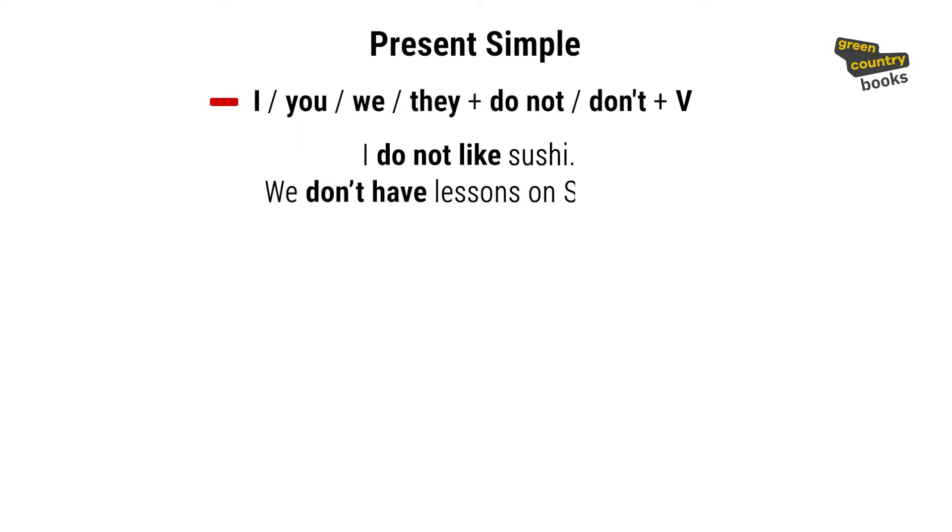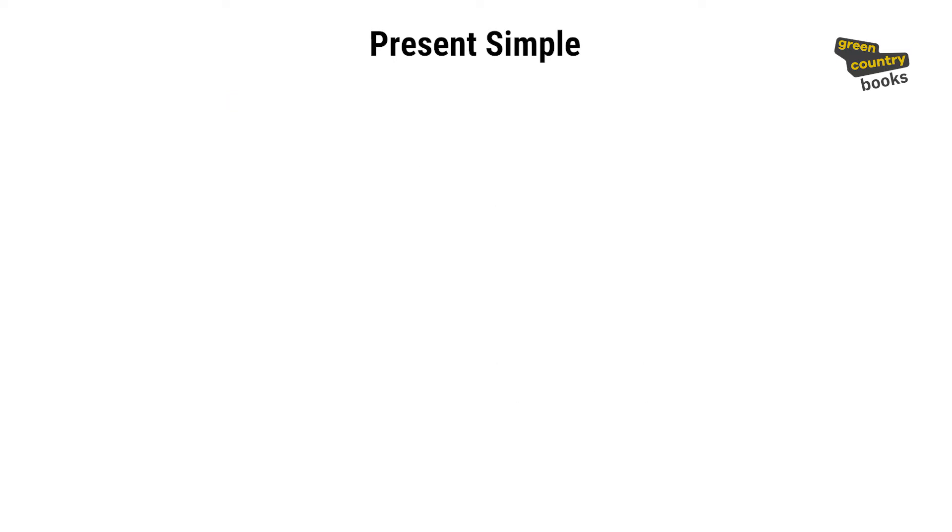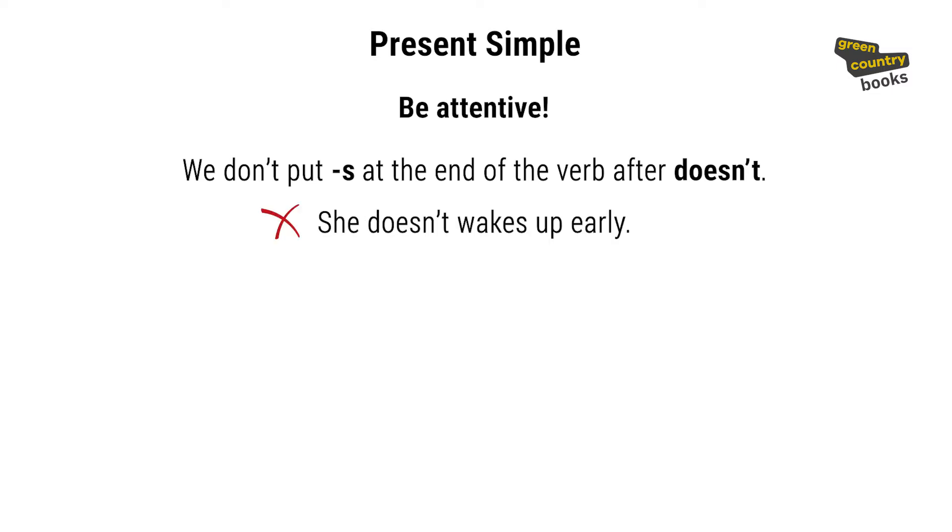With he, she, it, we add does not or doesn't before the verb. My dad does not work from home. Sam doesn't visit his grandparents every month. Be attentive! We don't put -s at the end of the verb after doesn't. Not 'she doesn't wakes up early,' but 'she doesn't wake up early.' Let's practice!